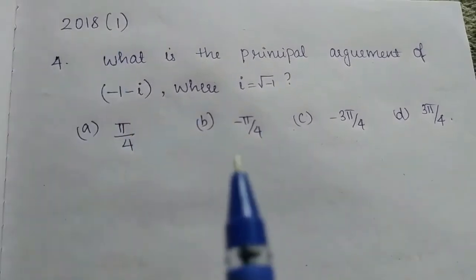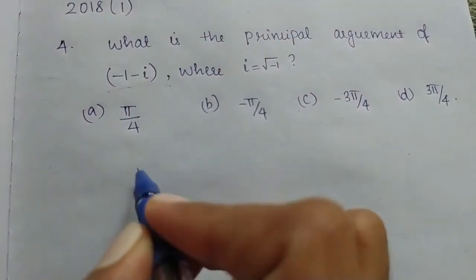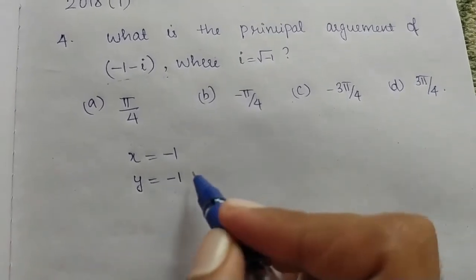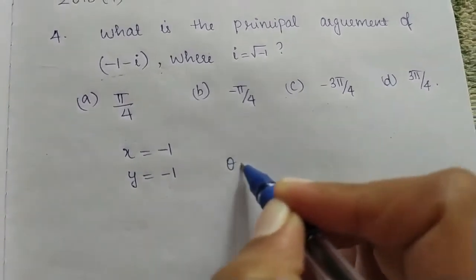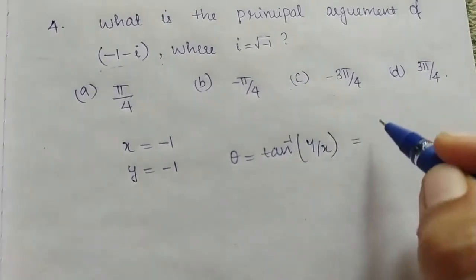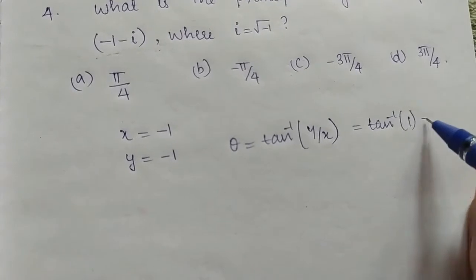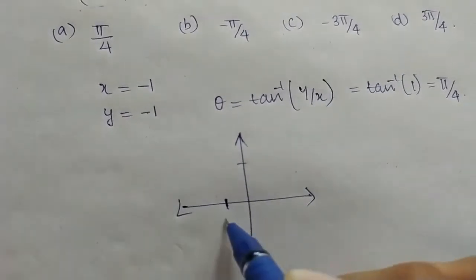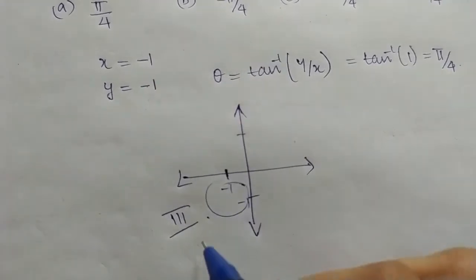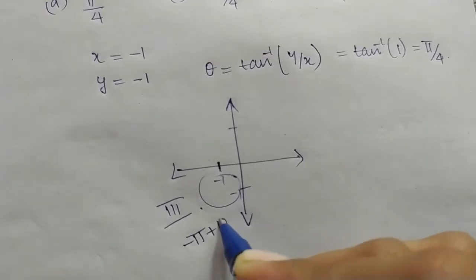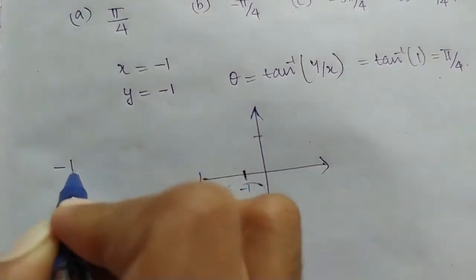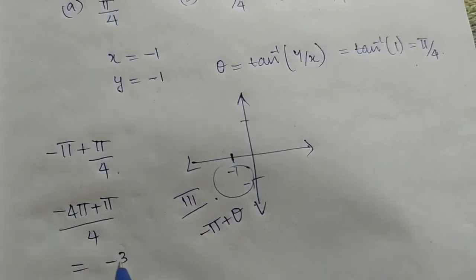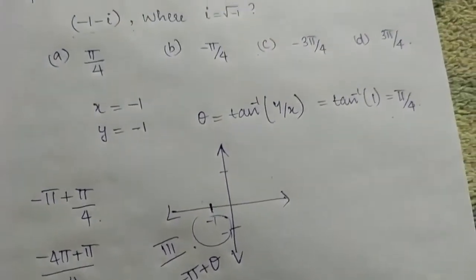Next question from 2018: what is the principal argument of the complex number? Separating x and y, x equals minus 1 and y equals minus 1. We compute tan inverse of y by x, which is tan inverse of 1, equal to pi by 4. Since the complex number lies in the third quadrant, theta equals minus pi plus pi by 4, which equals minus 3pi by 4. That is the principal value.